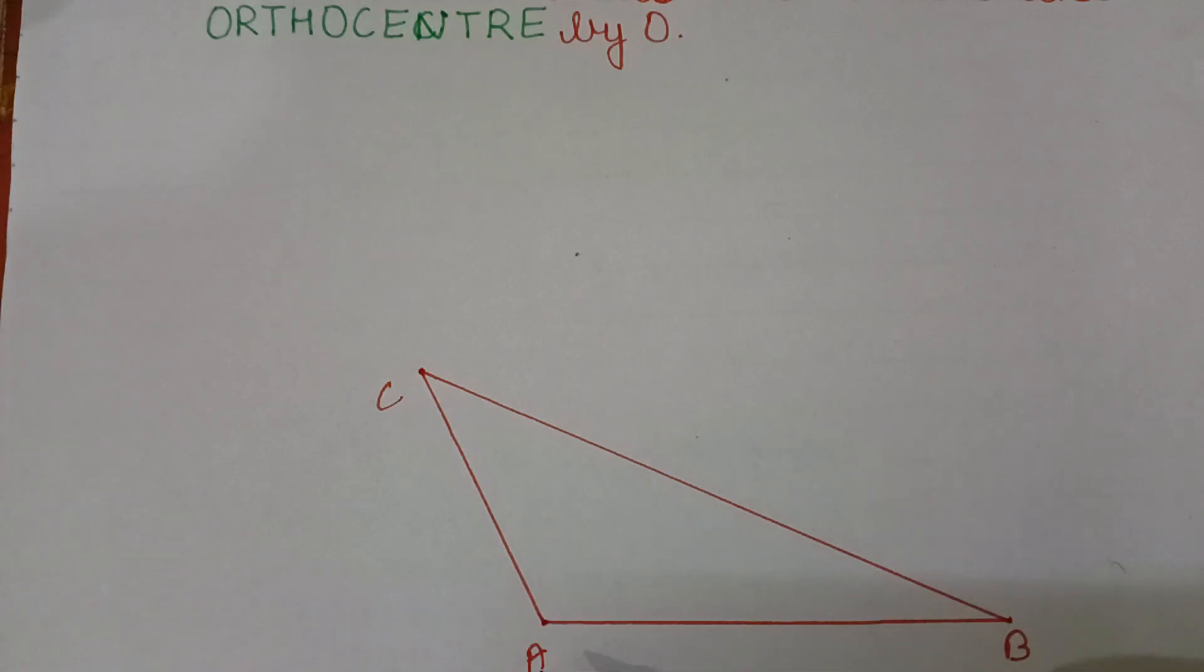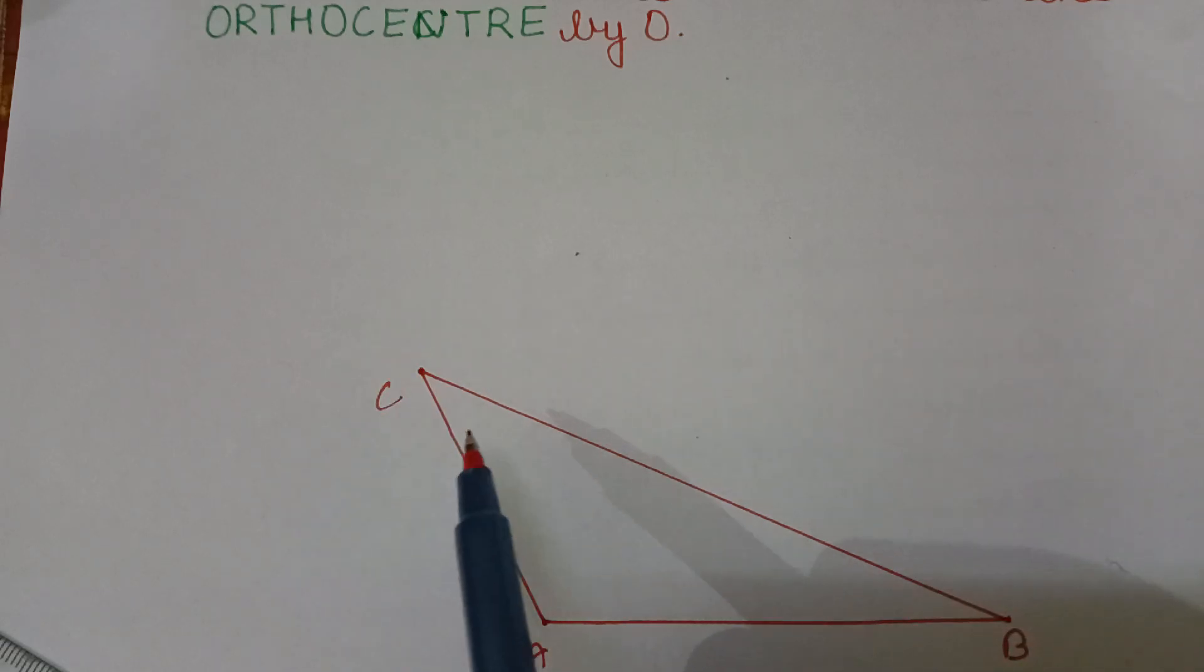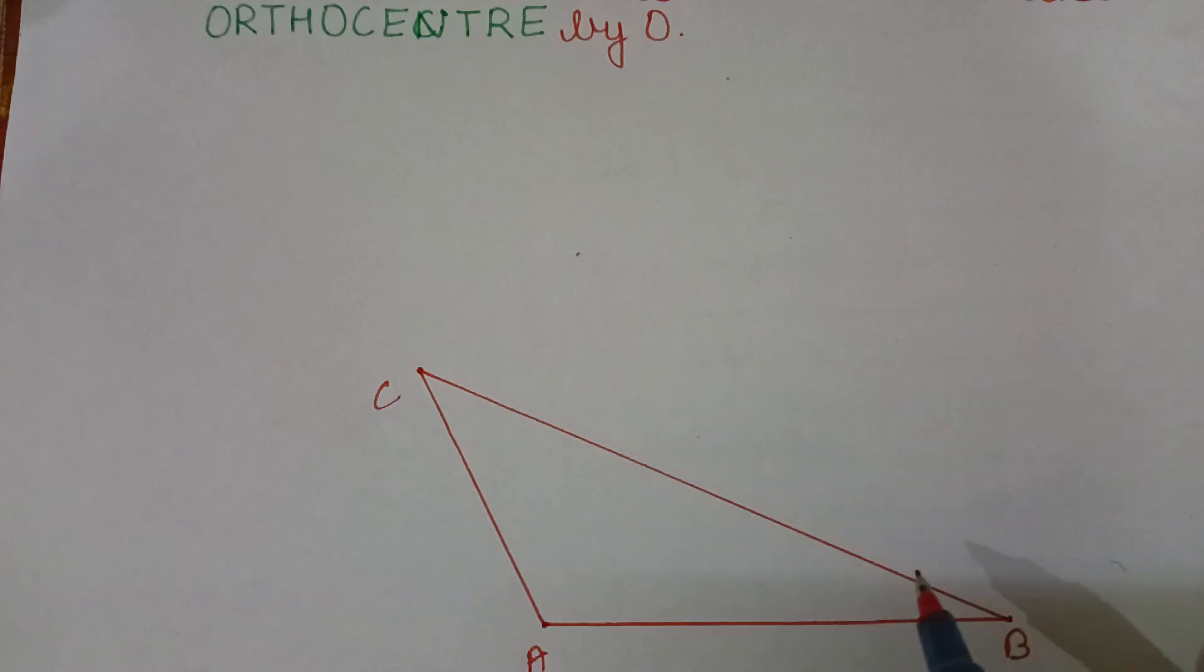This is the ABC obtuse angle triangle. Now, draw the altitudes that is perpendicular from the vertices to the opposite angle from A to BC, from B to AC and C to AB. First we draw from point A. From point A, we have to draw the altitude on side BC.